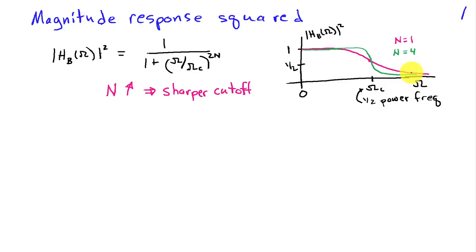So I've illustrated two different cases here, say n equals 1, which is a fairly slow transition, and then n equals 4, which would be a much faster transition. It's clear from looking at the magnitude response squared that this filter has a monotone decreasing frequency response. The magnitude response decreases as omega, the frequency, increases.